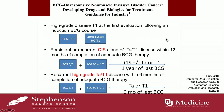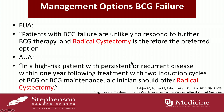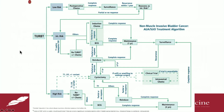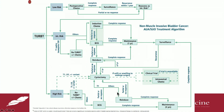Now that we have defined BCG unresponsive disease, what are the management options? According to the EAU and AUA guidelines, the gold standard is radical cystectomy — remove the bladder. However, many patients are unwilling or not fit enough to tolerate surgery. For those patients, the AUA guidelines show a complex flow chart where all roads lead to cystectomy, but alternatives include enrollment in a clinical trial if available, or intravesical therapy.